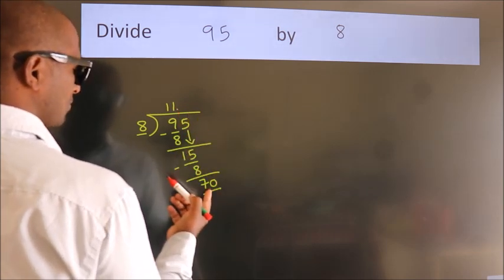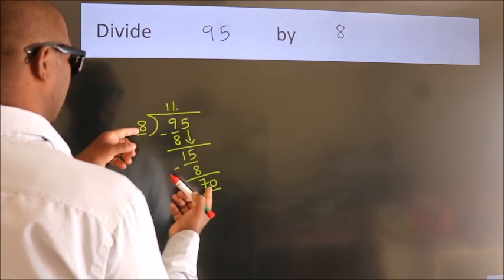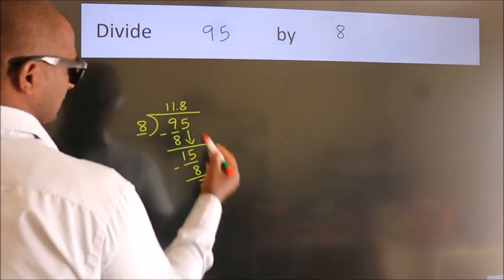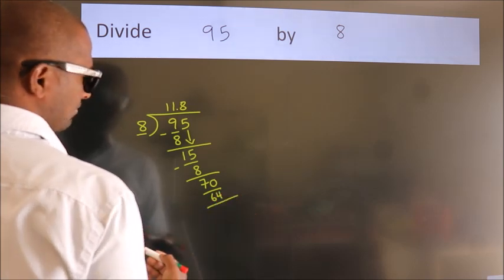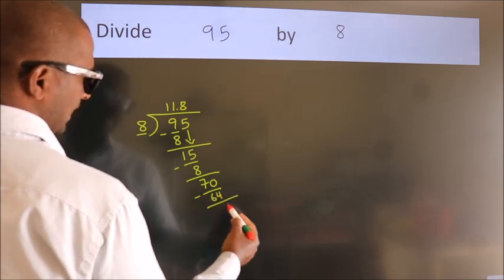A number close to 70 in the 8 table is 8 eights 64. Now we subtract. We get 6.